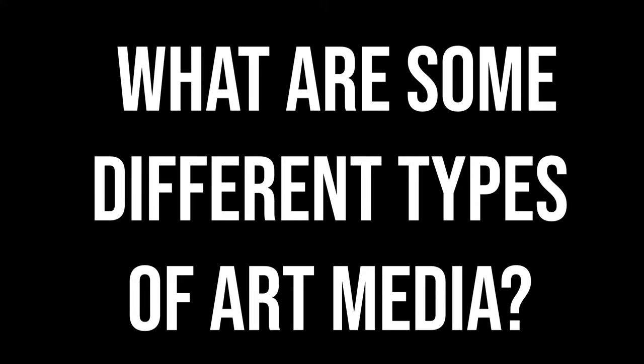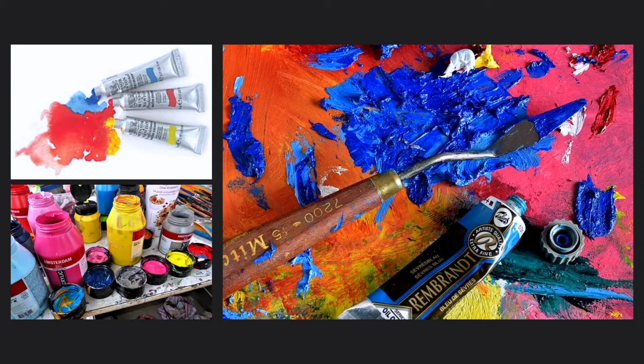Now what are some different types of art media? There's a whole bunch. There are so many different types of paint. We could have watercolor, acrylic, oil, or gouache — which is like opaque watercolor — or tempera paint, latex paint, just like your regular old house paint, or enamel paint, spray paint, or casein. There are all these options for different types of paint you can use.